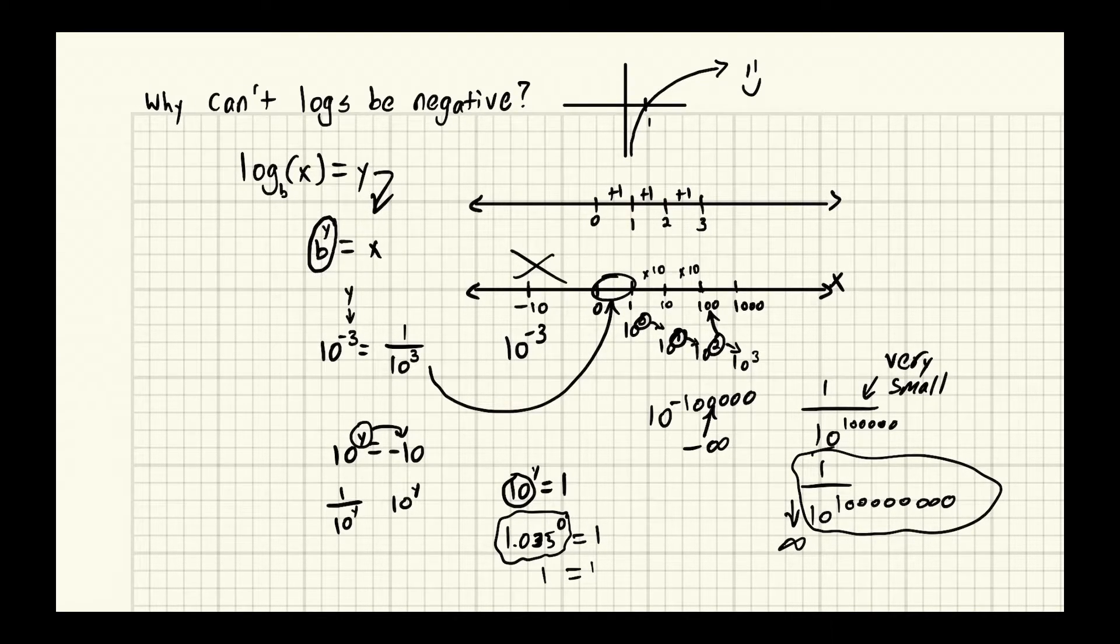So what we're saying is for a log of some base b, so in our case we're using base 10 but it could be any base, what x value results when we have, or in this case we pick an x value, so we pick a point on the number line, and we say what is the exponent necessary that this base must be at in order to produce it.